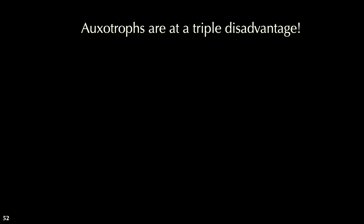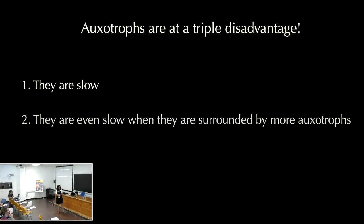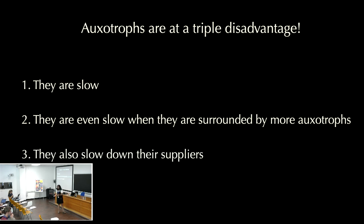My understanding is that these auxotrophs are at a typical disadvantage. First, they're slow because they cannot produce methionine. Second, they're even slower when surrounded by more auxotrophs, because those other auxotrophs are scavenging the leaked amino acids. And they also slow down their wild type suppliers in the immediate neighborhood. This is why I think they are growing super slow.